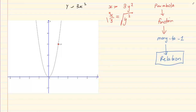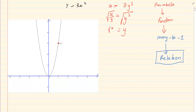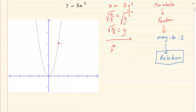Then I am going to root it, so I would have y is equal to the square root of x over 3. You write it as f⁻¹(x) is equal to the square root of x over 3.